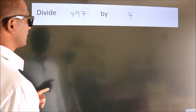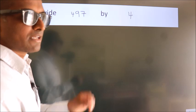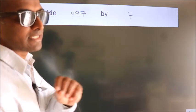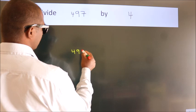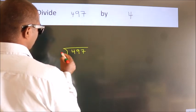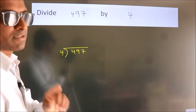Divide 497 by 4. To do this division, we should frame it in this way. 497 here, 4 here. This is your step 1.